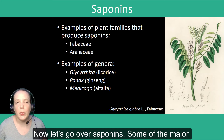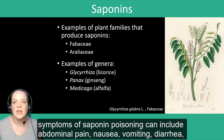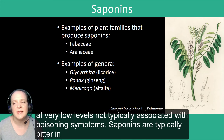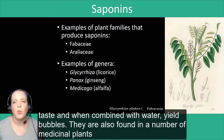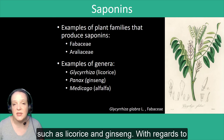Now let's go over saponins. Some of the major symptoms of saponin poisoning can include abdominal pain, nausea, vomiting, diarrhea, and skin irritation. Certain foods such as lentils do have saponins present, but at very low levels not typically associated with poisoning symptoms. Saponins are typically bitter in taste and yield bubbles when combined with water. They are also found in a number of medicinal plants, such as licorice and ginseng.